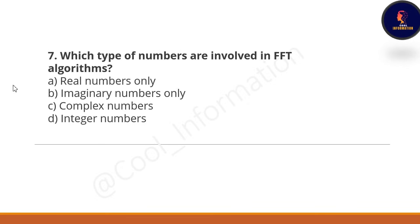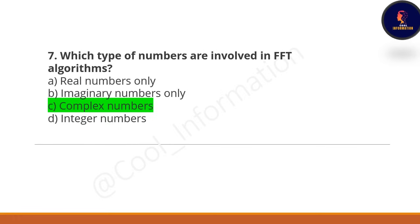Next question: which type of numbers are involved in the FFT algorithm? Option A is real numbers only, Option B is imaginary numbers only, Option C is complex numbers, and Option D is integer numbers. The correct option is Option C — complex numbers.